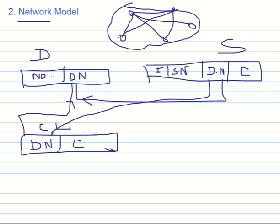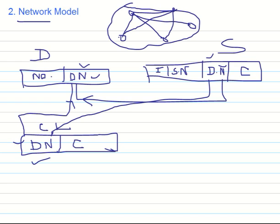However, the drawback of the network model is system complexity — many pointers are used to point to different tables. For example, this department name pointer points to both the course table and the student table, making the system complex. The second drawback is lack of structural independence.